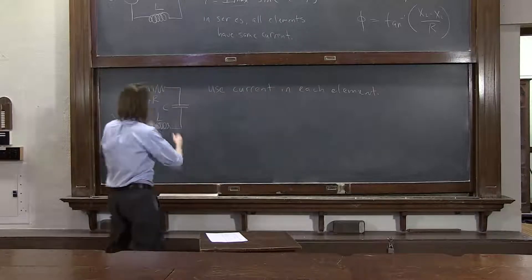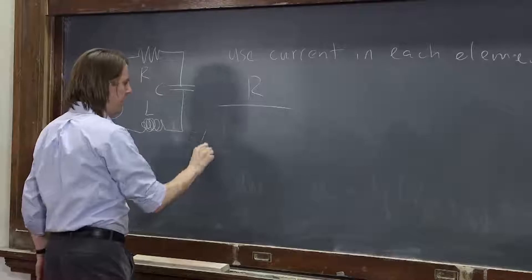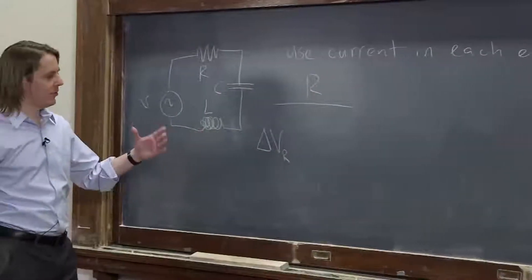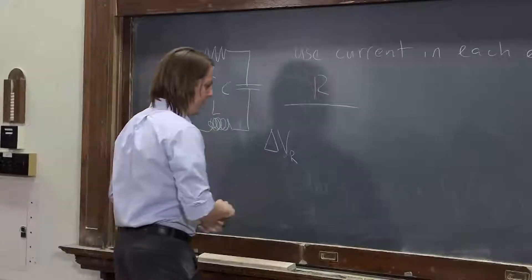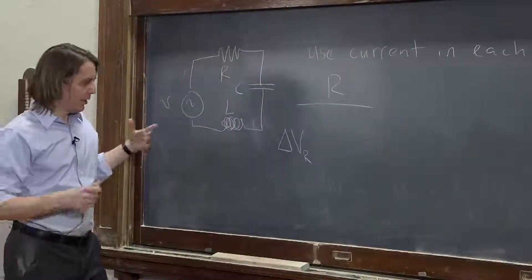So say you want to know what is the voltage drop across the resistor. Well, you say delta Vr, so capital V there means that's the maximum value. That's the delta Vmax over the resistor. Well, it's equal to Ir.